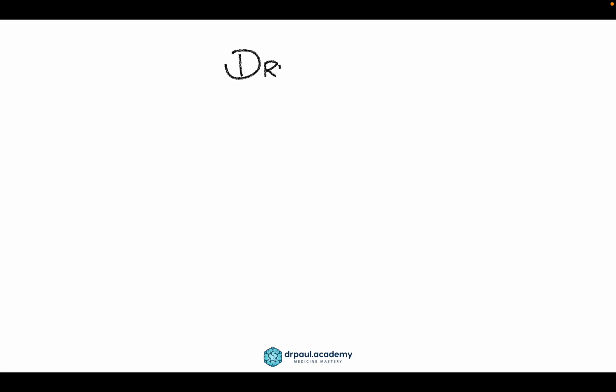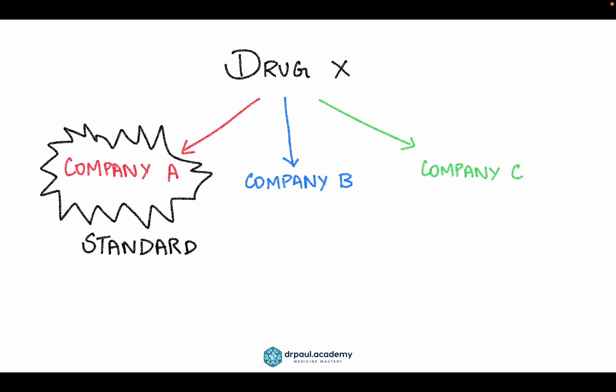You might know that a particular drug might be sold by different companies. One of those companies might be the first company to manufacture and distribute the drug. Ultimately, after some time passes, other companies will start producing the drug.